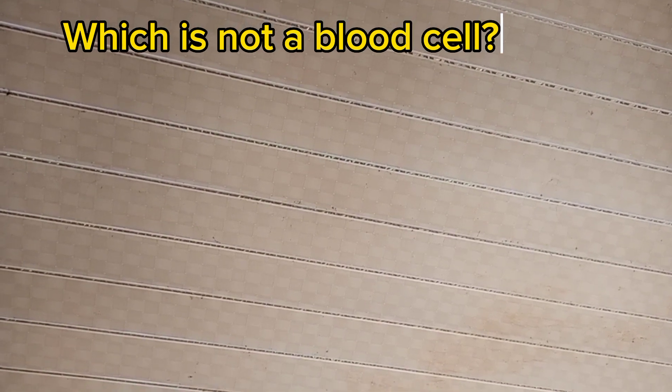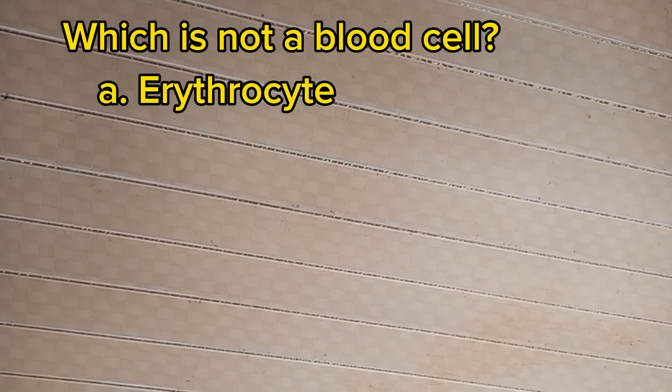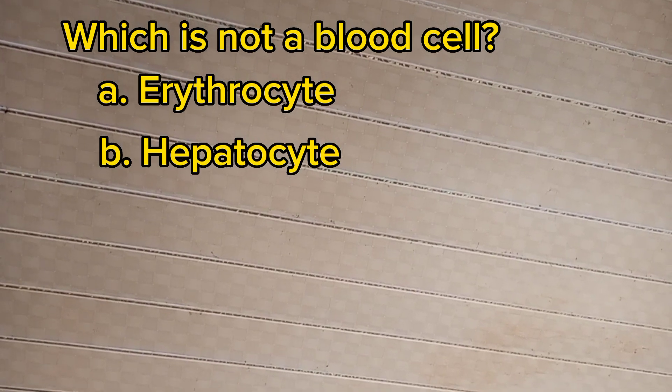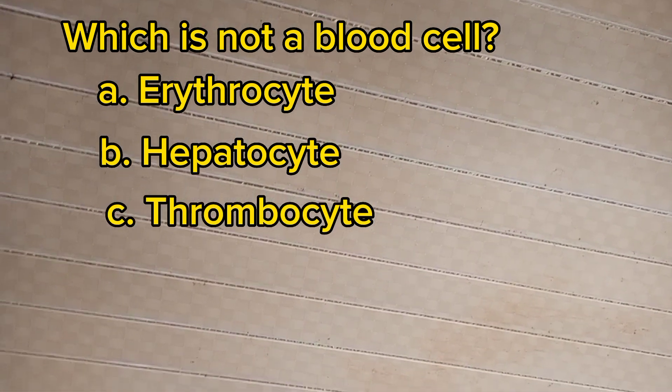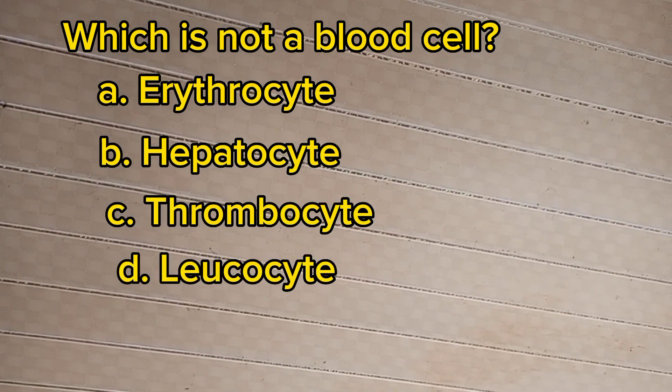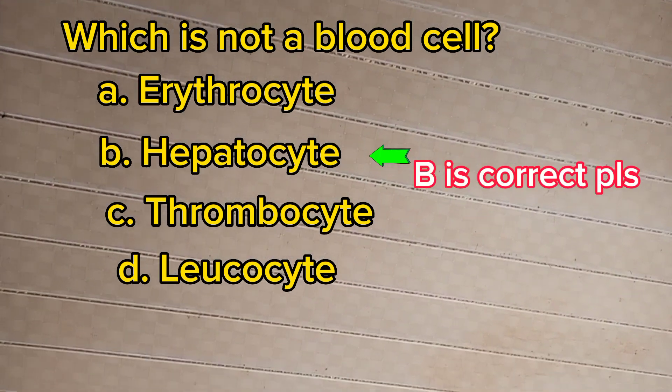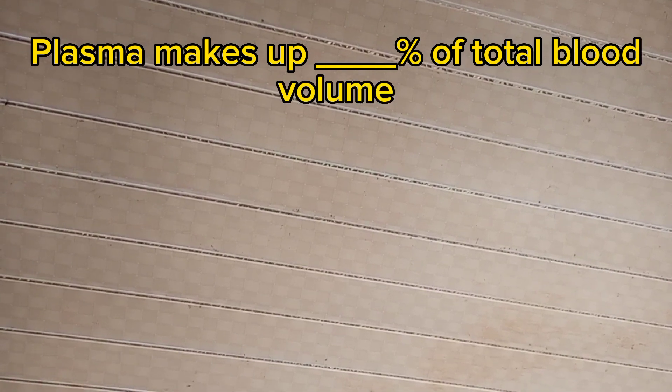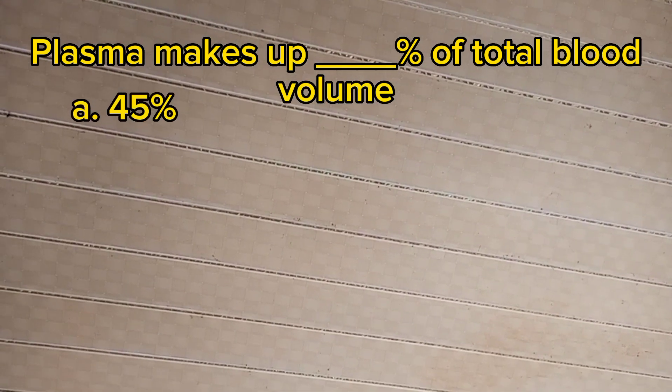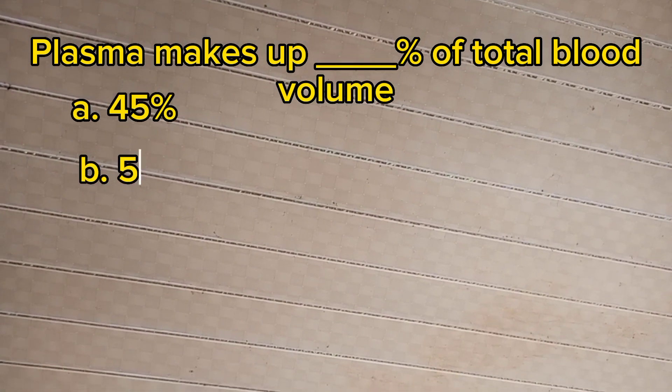Number three: Which is not a blood cell? A. Erythrocytes, B. Hepatocyte, C. Thrombocyte, D. Leukocyte. The answer is C, thrombocyte. Number four: Plasma makes up what percent of total blood volume? A. 45 percent, B. 55 percent,